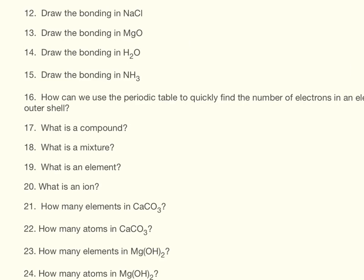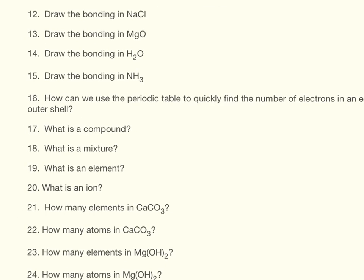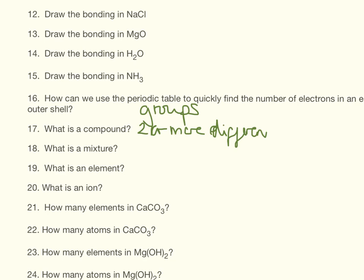Question 16: how can we use the periodic table? That is the group number. The group that it's in will tell you how many electrons are in the outer shell. What is a compound? That is two or more different elements chemically bonded together.